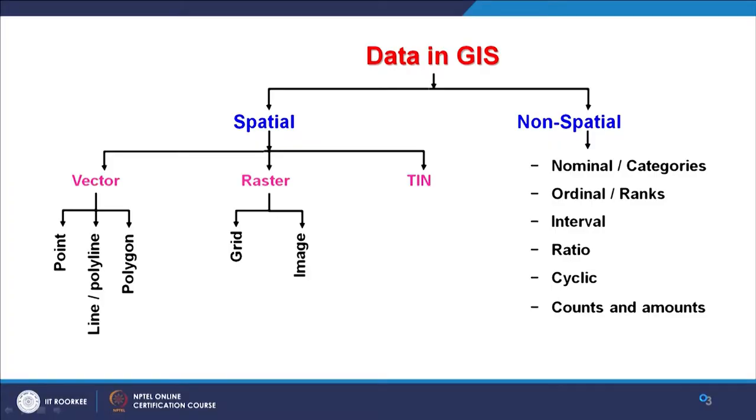Now let me discuss all types of data in GIS. There are 2 major types of data: one is spatial data, another one is non-spatial data. Spatial data includes vector data, raster data, and TIN data. Non-spatial data is mainly attribute data or tabular data. There are then different types of vectors — point, line or polyline, and polygon — 3 types of vectors.